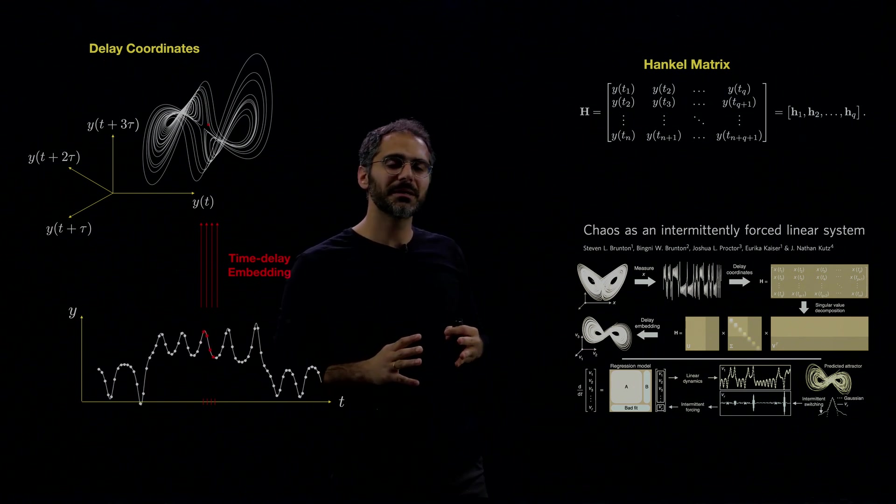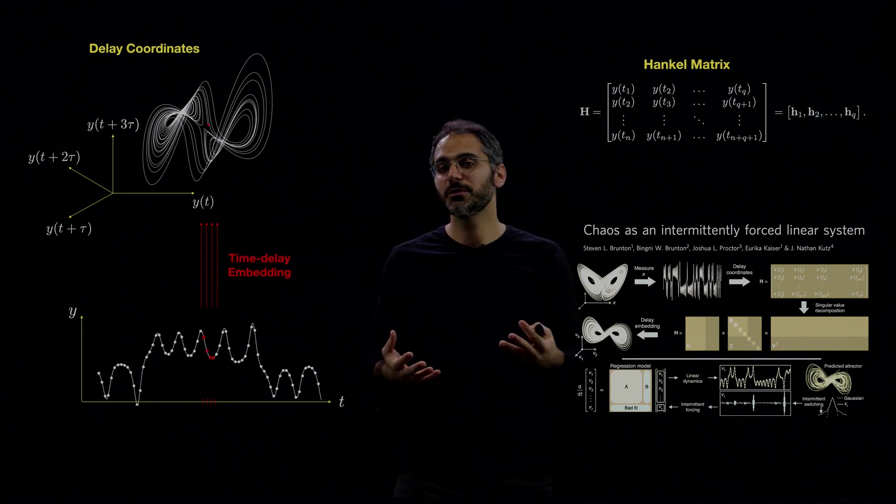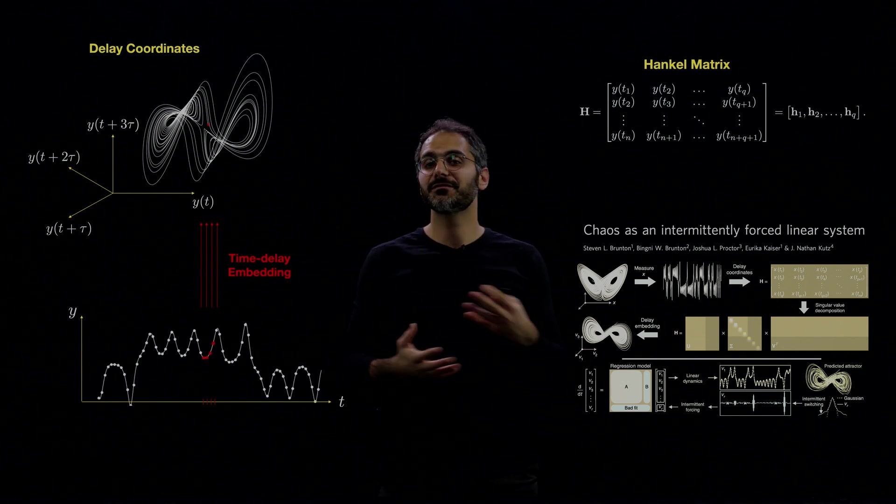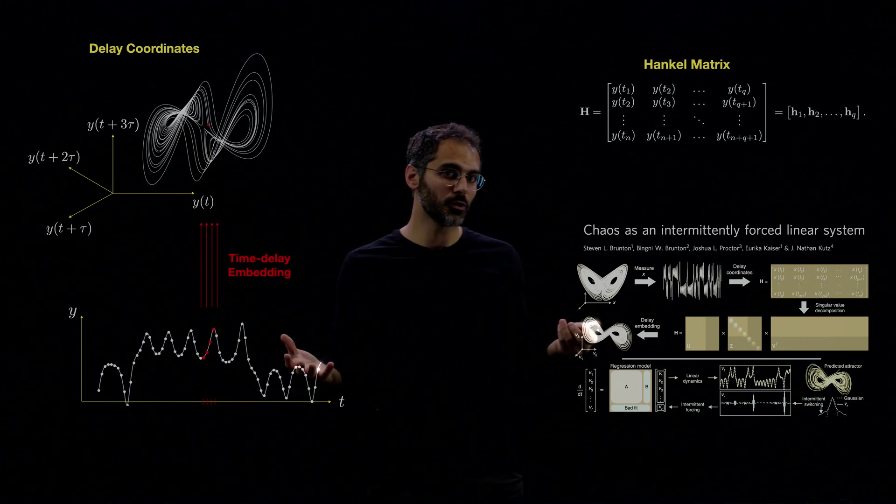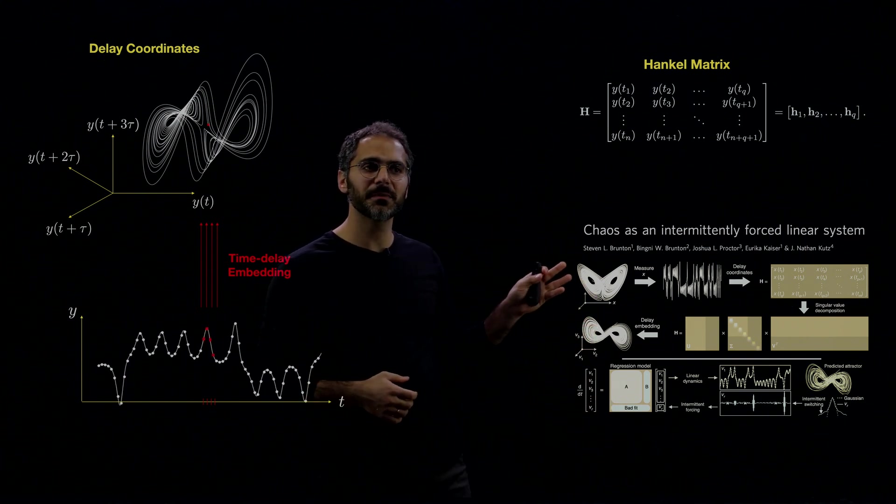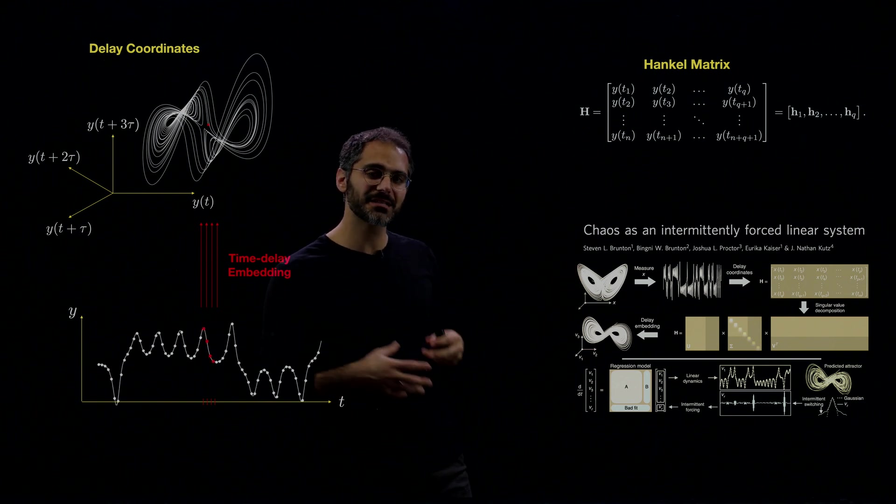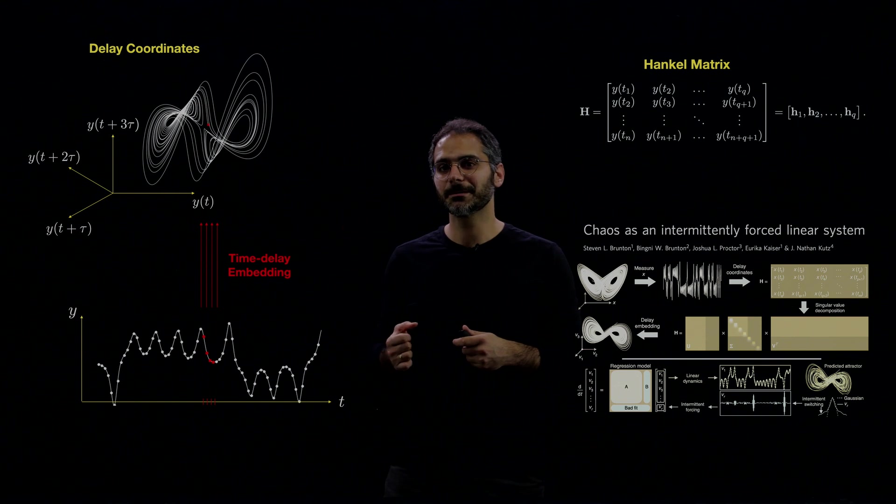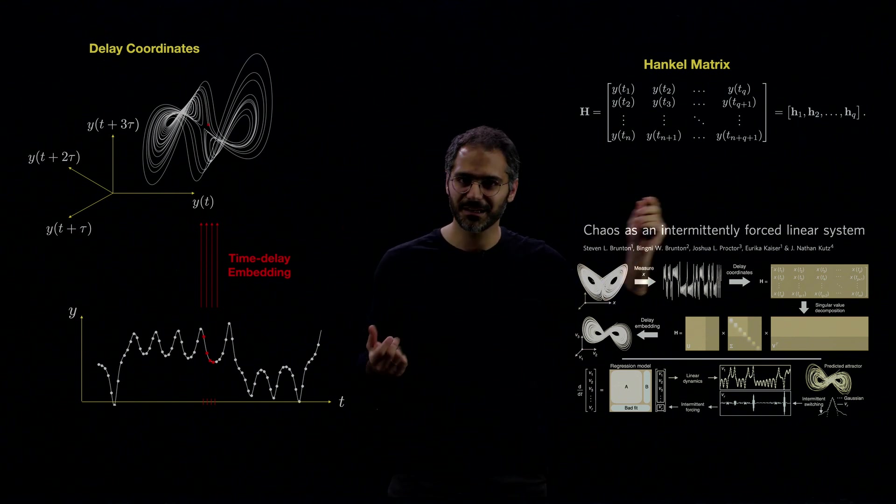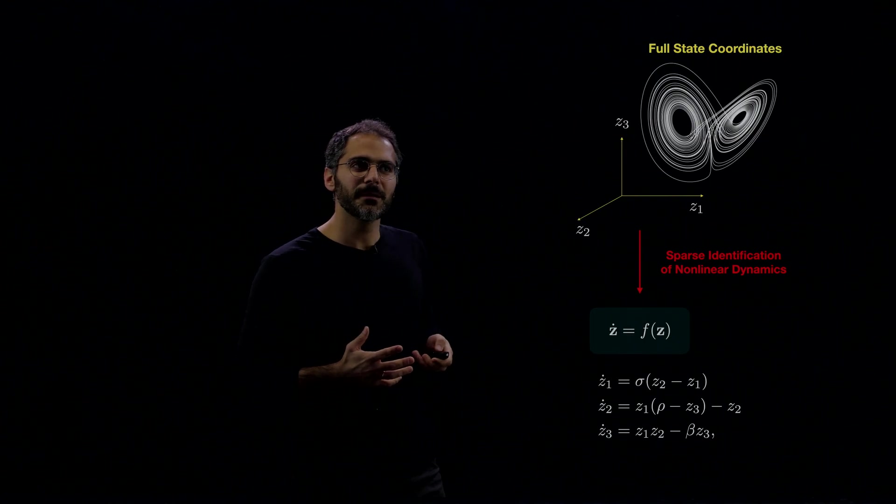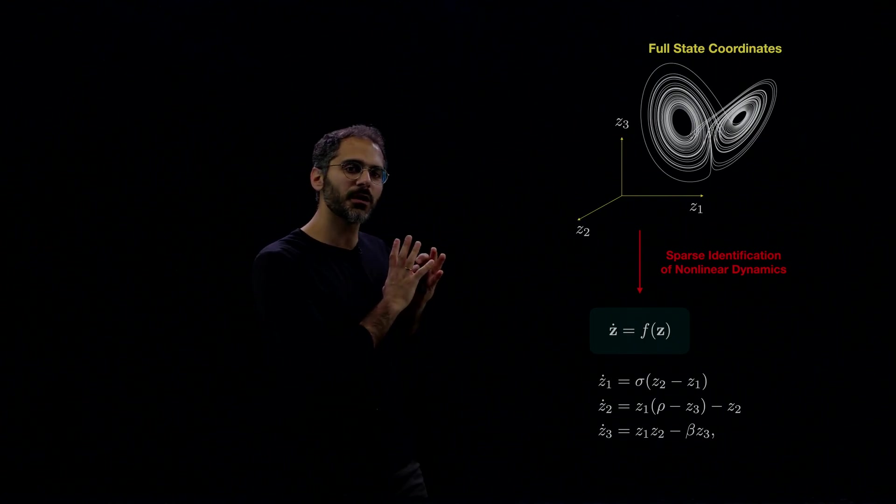Why use time delay embedding? This technique has been used extensively, for example, to highlight the difference between chaos and noisy dynamics, or noise. And recently, my colleagues showed that chaos can be cast as an intermittently forced linear system using time delay embedding, or using the dominant modes of the Hankel matrix. I encourage you to look at this paper. It's very interesting.